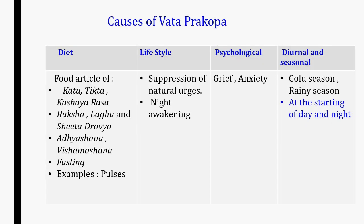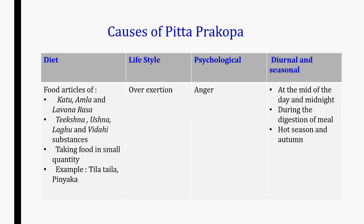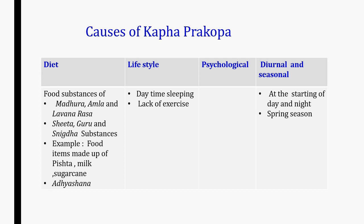Solidified increase occurs in Chayavastha and liquid increase in Prakopavastha. Vatprakop takes place due to intake of food substances of Katu, Tikta, Kashaya, Ruksha and Laghu qualities; Sheet, rough quality; suppression of natural urges; night awakening; grief and anxiety as psychological factors; at the starting of day and night, in cold and rainy seasons. Pitta Prakop takes place due to intake of Katu, Amla, Lavana, Tikshna, Ushna substances; over-exertion; due to anger and during digestion of meal, in hot season and in autumn. Kapha Prakop takes place due to intake of Madhura, Amla and Lavana rasa in excessive quantity; Sheeta substances; food items made of paste and milk; daytime sleeping; lack of exercise; and at the starting of day and night in spring season.